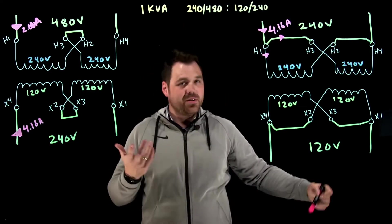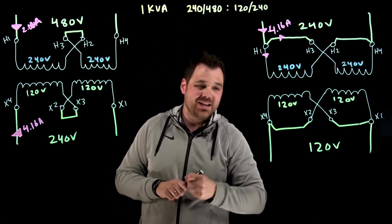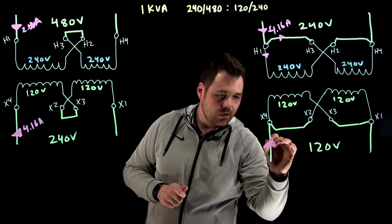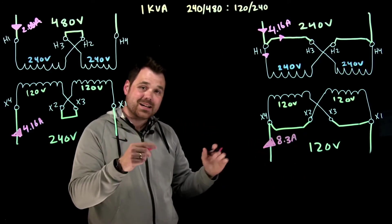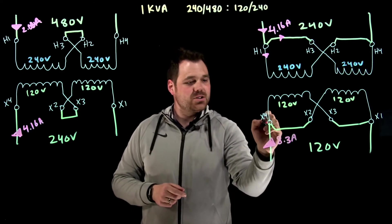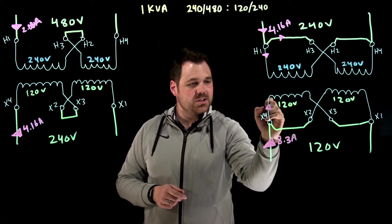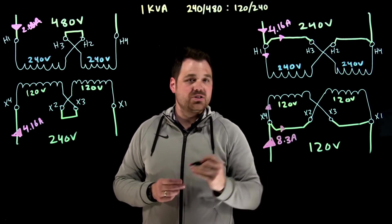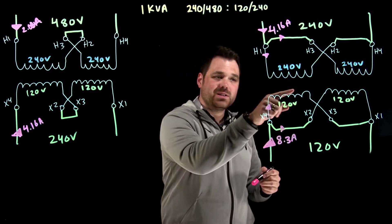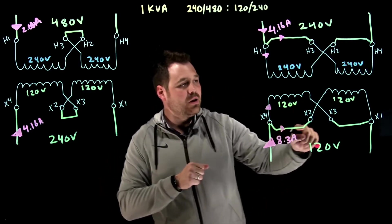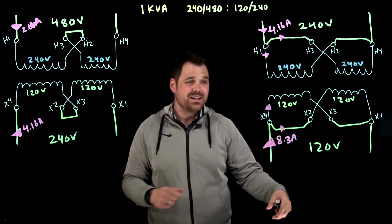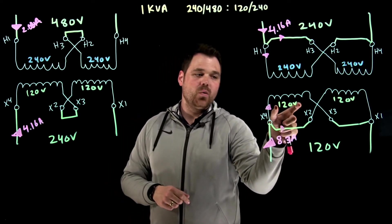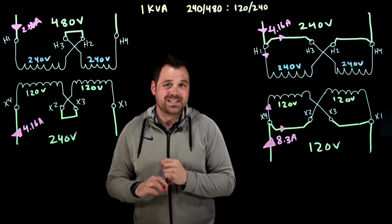1000 VA divided by 120. That's going to give me 8.3 amps. Crazy, that's more. But remember, as soon as it hits this point, it's actually going to split into two. I'm going to have 4.16 amps go through this winding and 4.16 amps go through this winding. So the winding is actually rated for 120 volts, 4.16 amps.